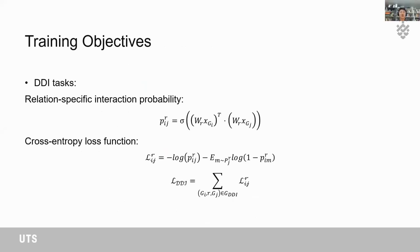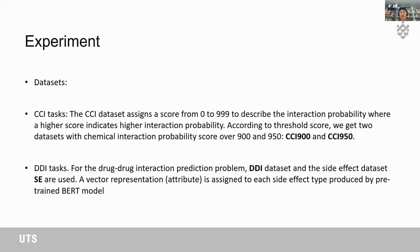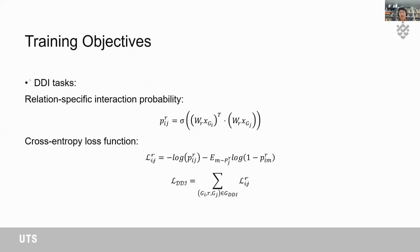Yes, we tried triplet loss for the DDI task because the DDI task is somewhat like a triplet — we have graph GI, relation R, and graph GJ. However, the cross-entropy loss had better performance, so we chose that one.